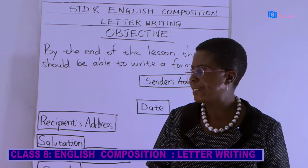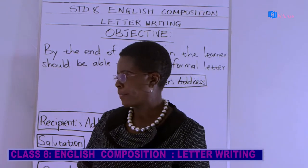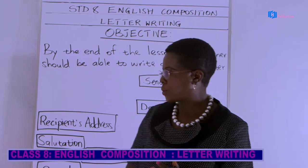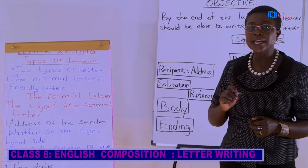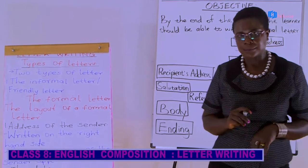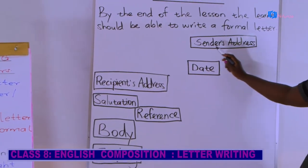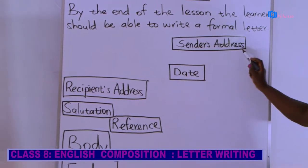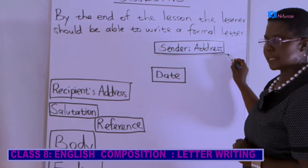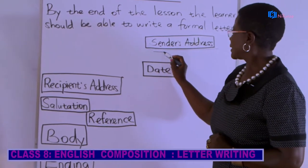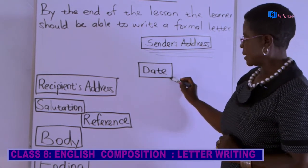We are going straight away to look at the layout of a formal letter. Number one, we want to look at the address. When you are writing this letter, you are the writer, so you are going to write the sender's address here. Make sure you write your name first, then you write the address.